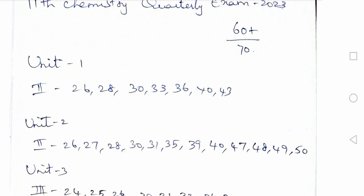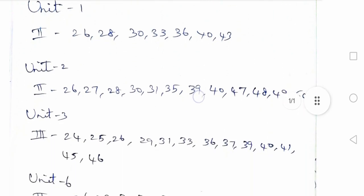First of all, Unit 1, 2nd Romalateral: 26, 28, 30, 33, 36, 40, 43. Unit 2, 2nd Romalateral: 26, 27, 28, 30, 31, 35, 39, 40, 47, 48, 49, 50. This question is about to go.